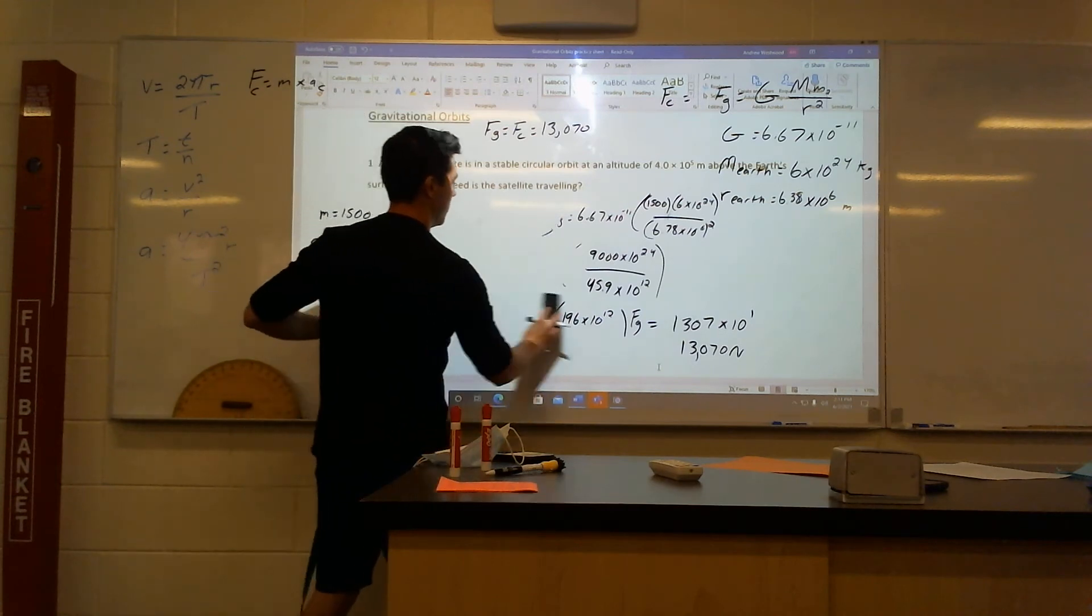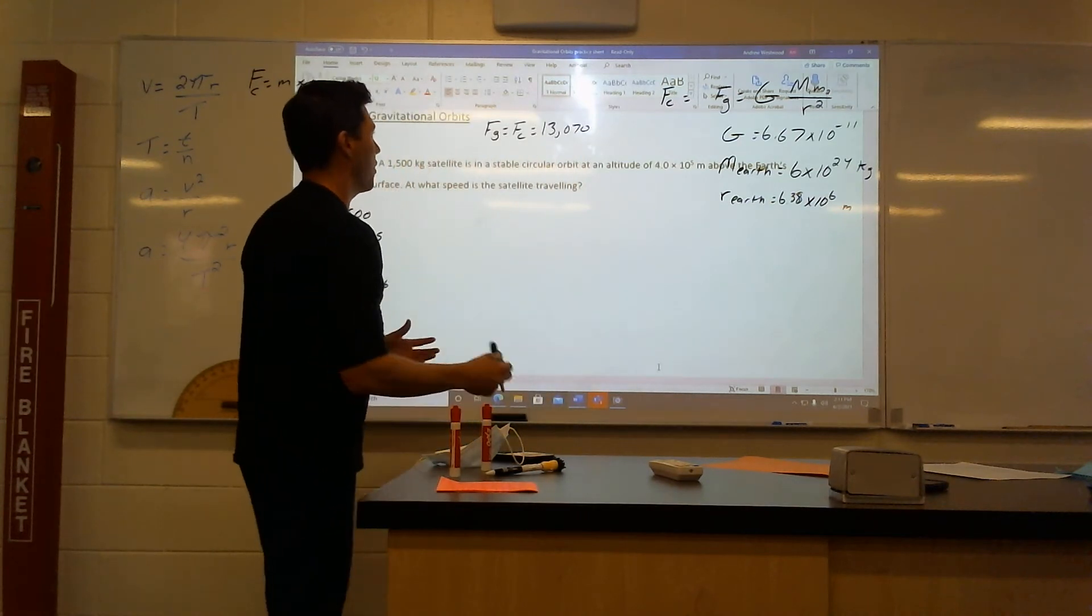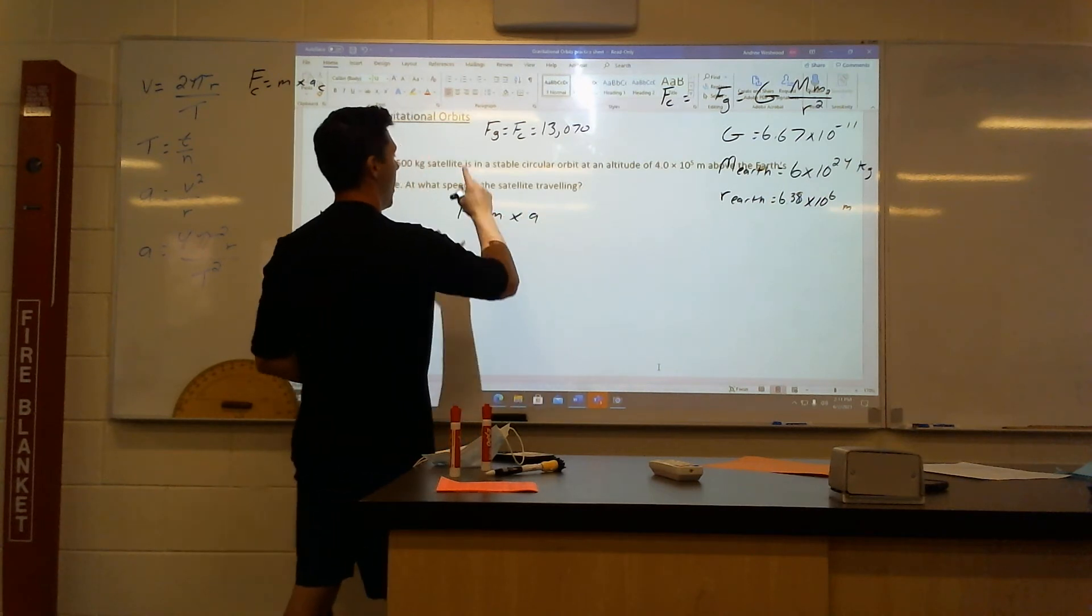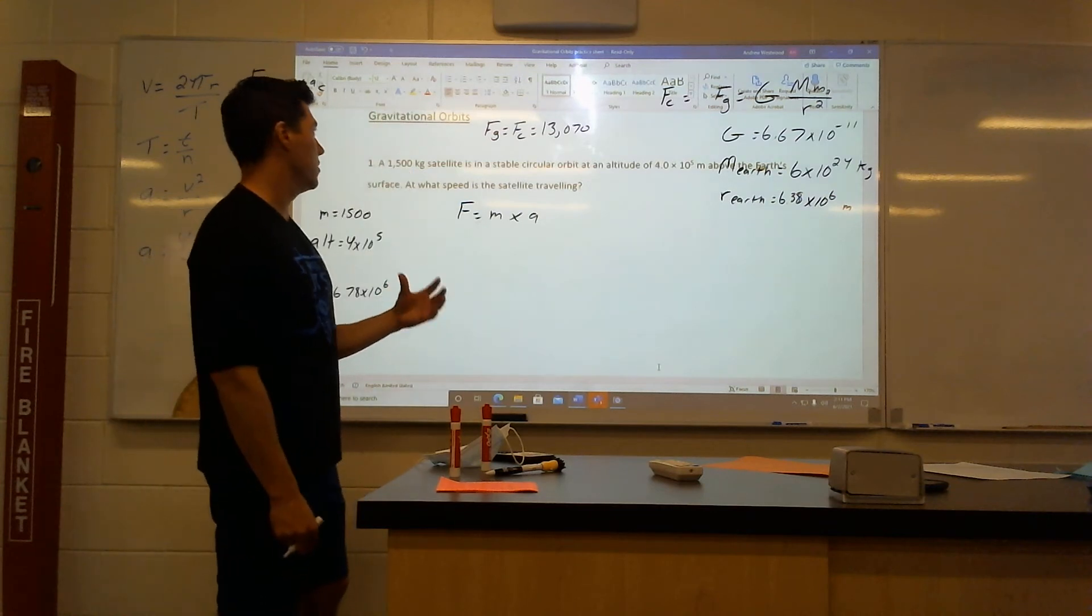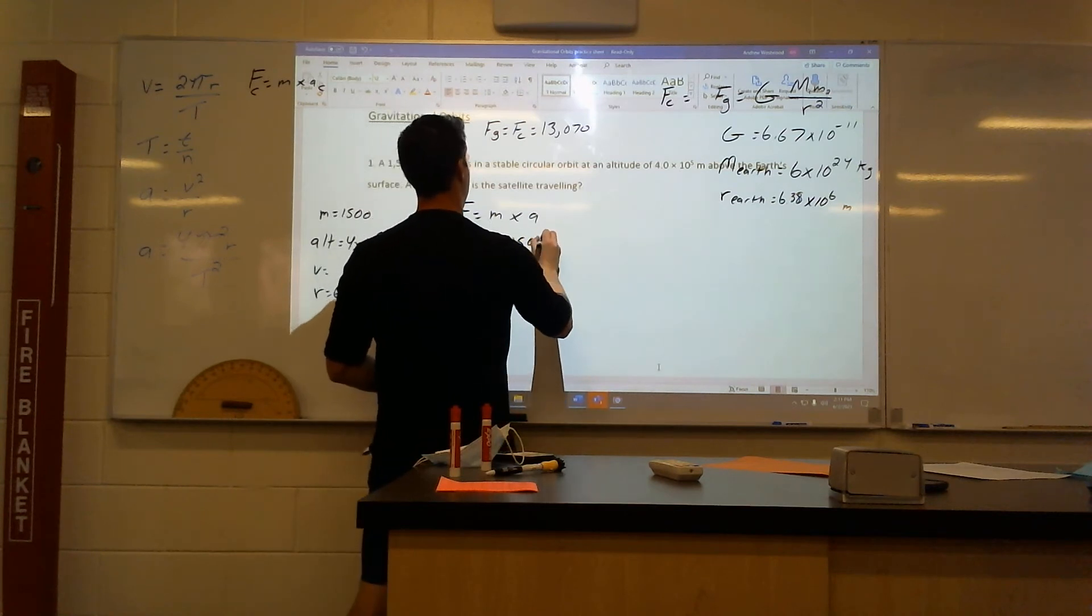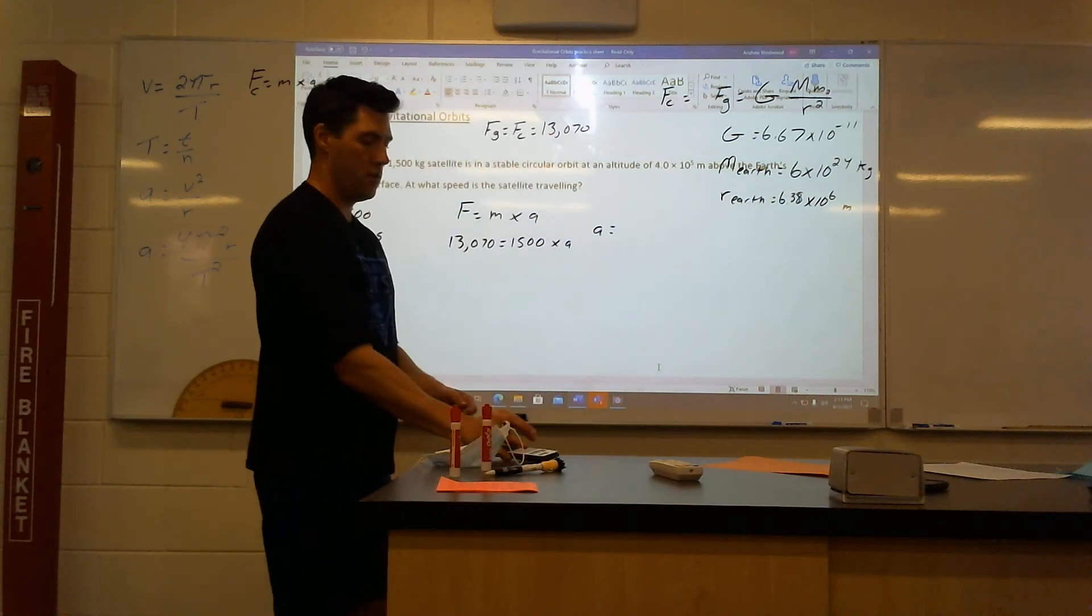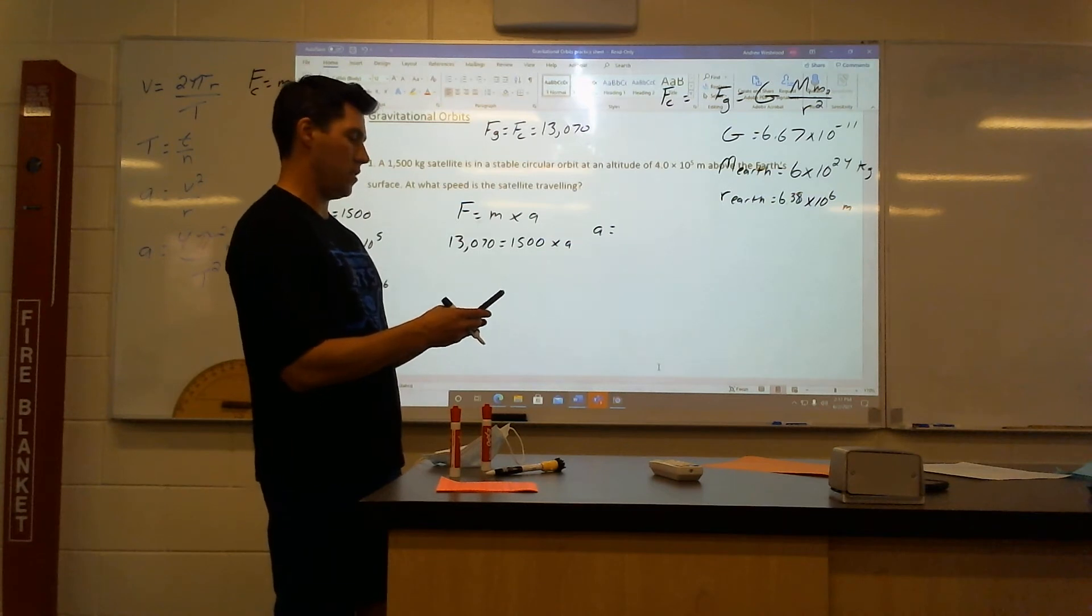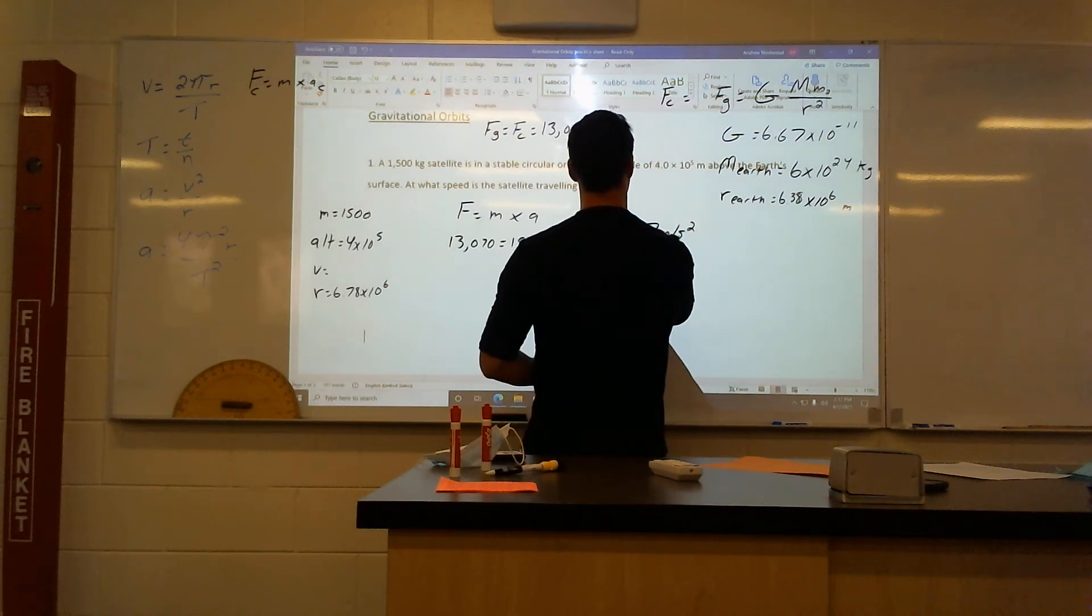And up here, my force of gravity, which also equals force centripetal, is 13,070. I'm going to erase this. Let's get to our next step. The next step's not too hard. These ones get a little easier. Let's turn this into an actual acceleration. How do I do that? Well, that one's easy. Force equals mass times acceleration. I have my force. This is the force that's keeping it in the actual centripetal motion. So, 13,070 equals, with a mass, 1,500 times acceleration. So, my acceleration is going to equal, just divide out, 13,070 divided by 1,500 gives me 8.7 meters per second squared. So, there's my acceleration.